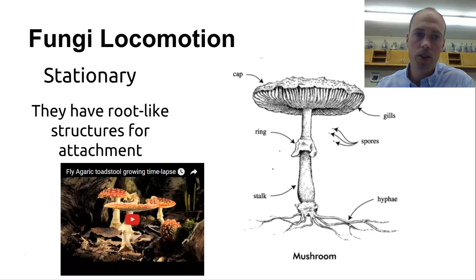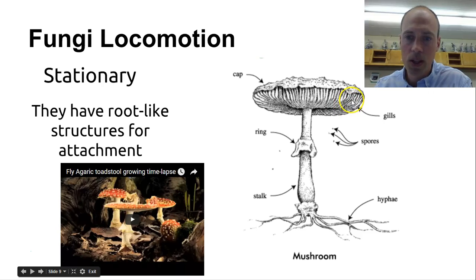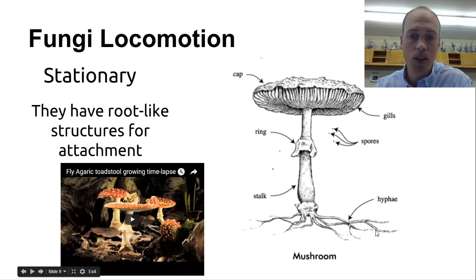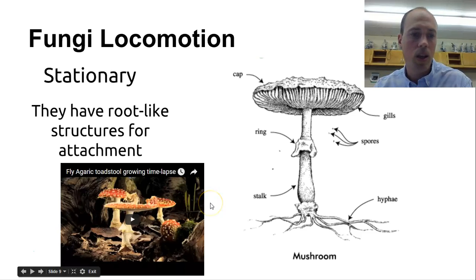Fungi don't really move all that much. They are stationary, kind of like plants. They do have root-like structures for attachment, and you can see that there are different types of tissues that work together to form the whole organism. Here are some parts of a mushroom, a common fungus. The cap is on top. There are gills underneath that release the spores. This structure right here is known as the ring. There's a stalk, and then those hyphae do a good job of acting like roots and making that fungus stationary. If you look at anything under time-lapse, it really doesn't seem stationary anymore. If you want to watch a time-lapse of a mushroom grow, I'll include the link to that video in the show notes.